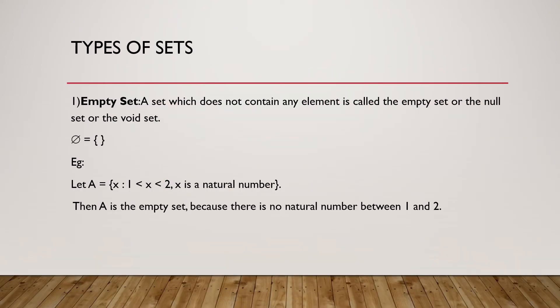Next, we have types of sets. We have first the empty set, which is also known as the trivial set. A set which does not contain any element is called the empty, null, or void set. For example, if we take a set A comprising natural numbers lying between 1 and 2, there is no natural number between 1 and 2, so this set is empty.